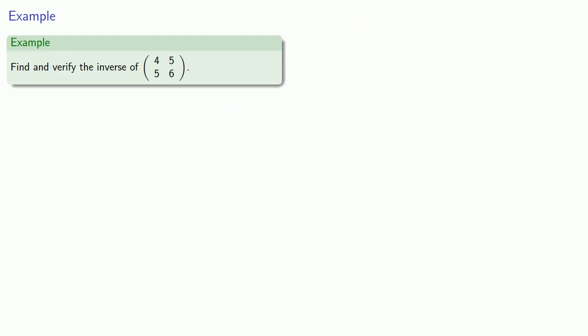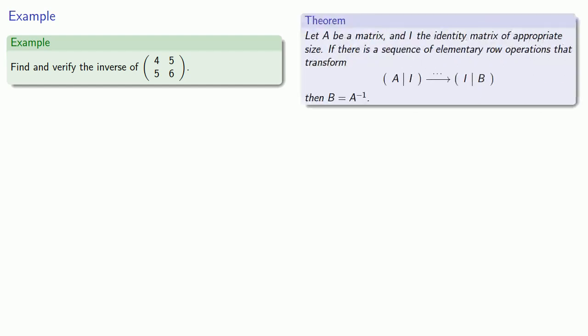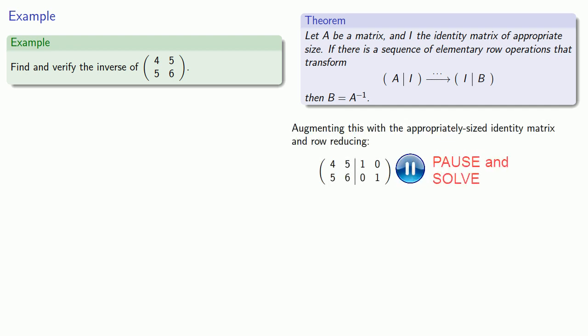So let's apply that. Suppose I want to find the inverse of the matrix. So our theorem says that we can take this matrix and augment it with the appropriately sized identity matrix, and then row reduce to find the inverse. So we'll augment our 2 by 2 matrix with the appropriately sized identity matrix, and we'll perform our row reductions.